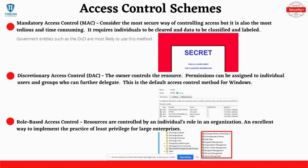Mandatory access control is considered the most secure way of controlling access to data. In the MAC scheme, a user must have a certain clearance level to access data, and data must be classified appropriately and placed on segmented networks that reflect its sensitivity. The DOD has separate networks for unclassified, secret, and top secret data. A user without a top secret clearance or a need to know will not be granted access to the top secret network.